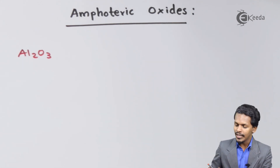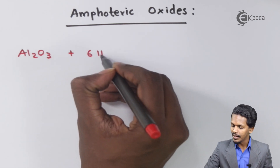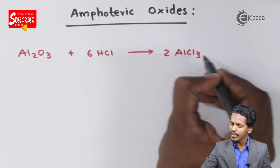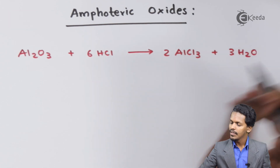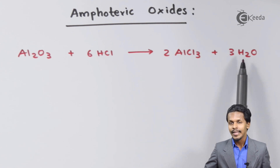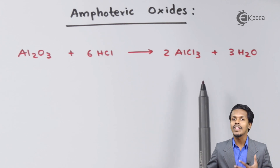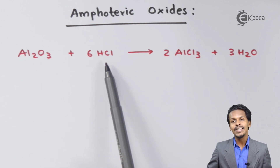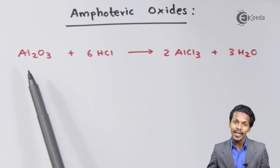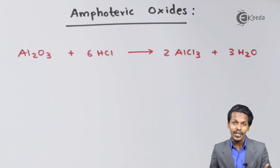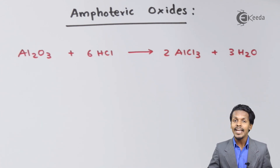When Al2O3 is treated with an acid — six moles of HCl — the product formed is two moles of AlCl3 along with three moles of H2O. Here, a salt and water are produced, which is characteristic of a neutralization reaction that occurs when an acid is treated with a base. Since HCl is a strong acid, Al2O3 is acting like a base, making it a basic oxide in this context.